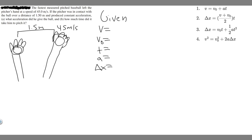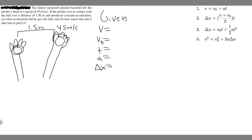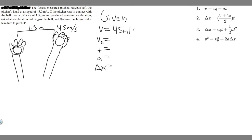So V, the final velocity — during this interval, what's the final velocity? We know it's 45 meters per second, because it's leaving his hand at that speed. This is the final velocity: 45 meters per second. What about the initial velocity? When you're throwing a baseball, the velocity of the ball at the beginning of the interval is nothing, because the ball isn't moving yet. So V sub 0, the initial velocity, is 0 meters per second.